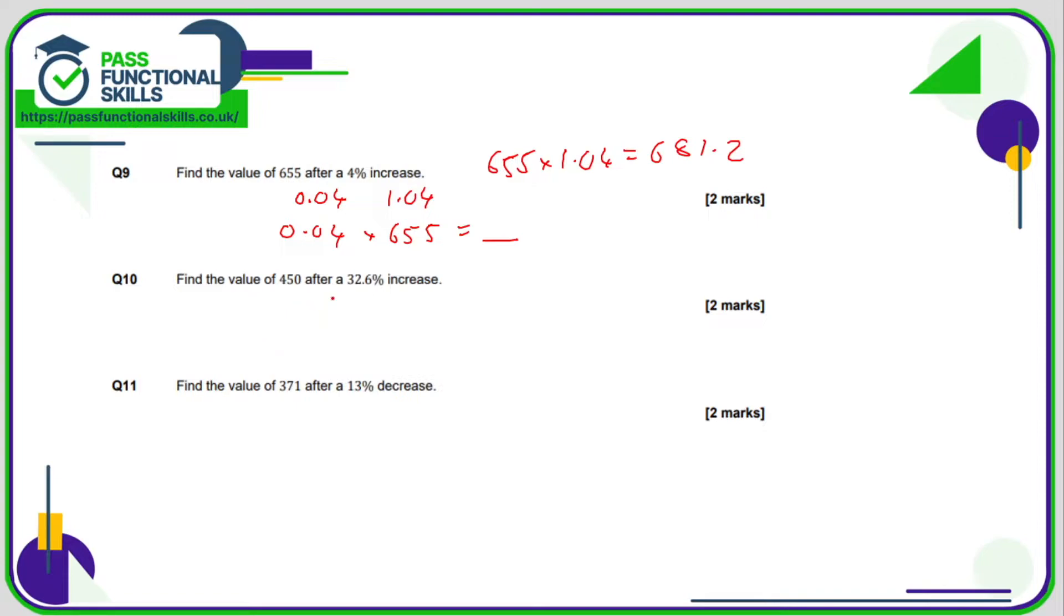Find the value of 450 after a 32.6% increase. Well, our multiplier for 32.6% is 0.326, but for an increase, we add 1, so that's 1.326, and that's what we need to multiply 450 by. And that gives us an answer of 596.7.